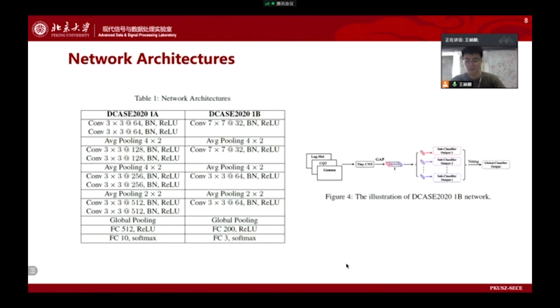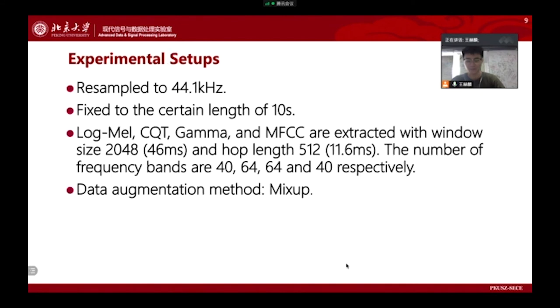Our base network architectures are shown in Table 1. For DCASE 2020 Task 1A, the network is a VGG-style network, whereas for DCASE 2020 Task 1B, a tiny CNN model is employed to achieve the low complexity, and other setups are the same as Task 1A. Here are some of the experimental setups. Details can be found in our paper.